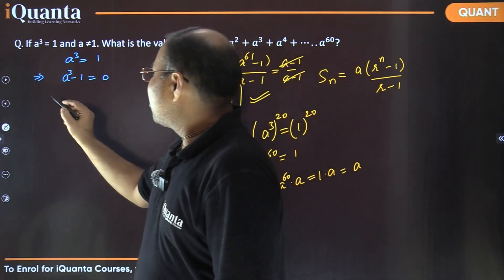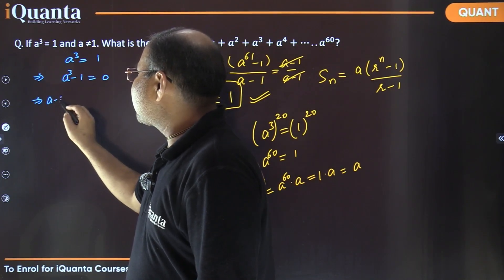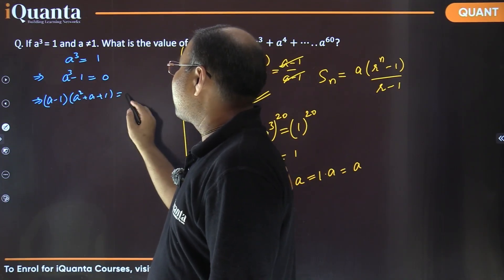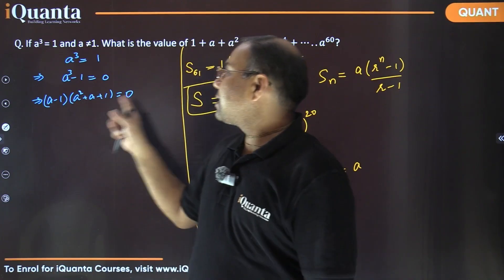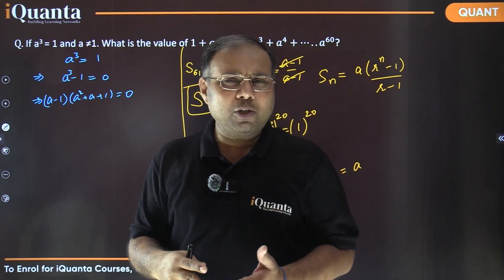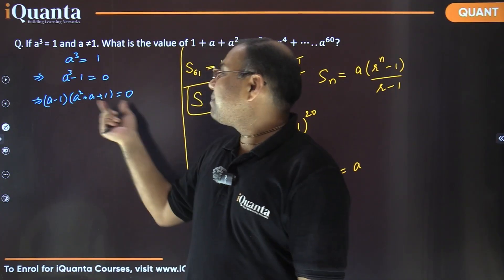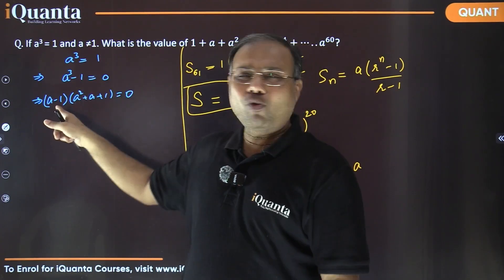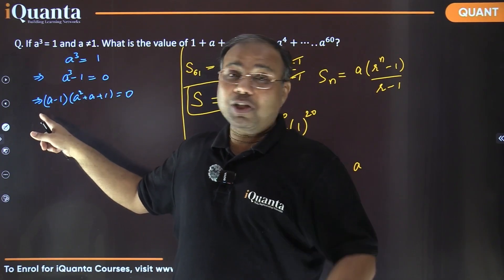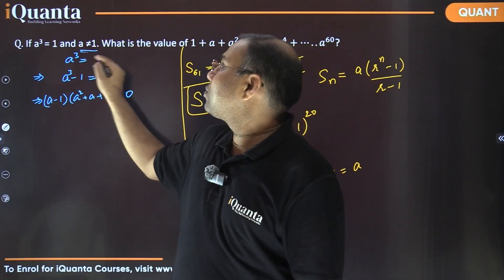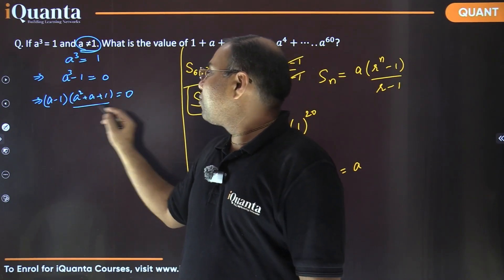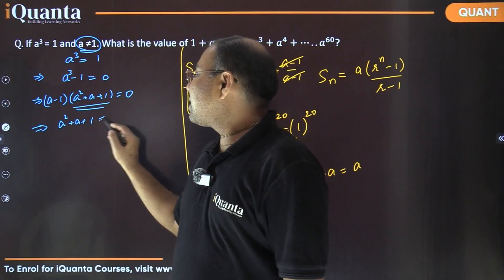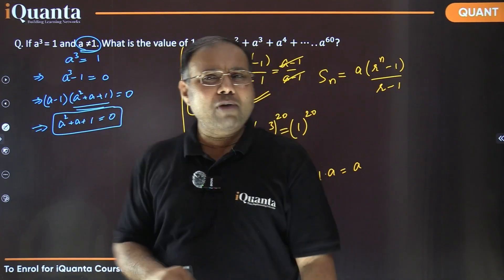Using the identity a³ − b³ = (a − b)(a² + ab + b²), with b = 1 this becomes (a − 1)(a² + a + 1) = 0. Since the product of two terms equals zero, at least one must be zero. But the first factor (a − 1) is not zero because a ≠ 1, so the second factor must be zero: a² + a + 1 = 0.